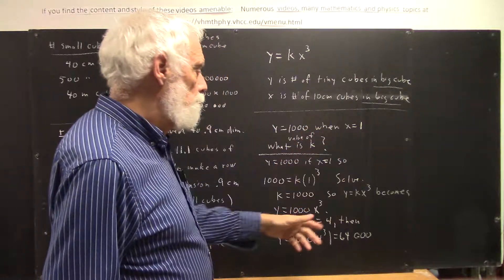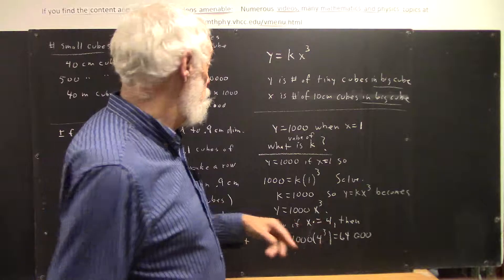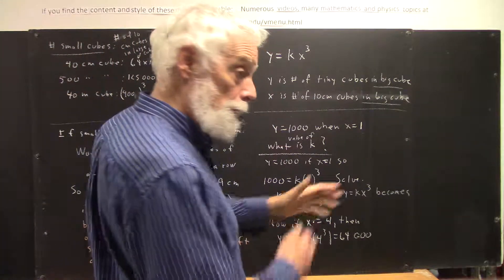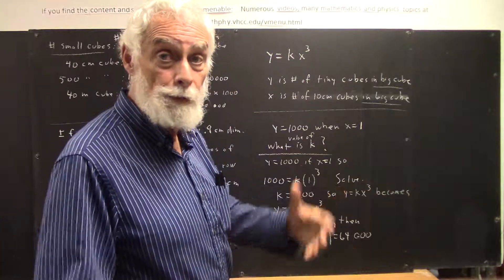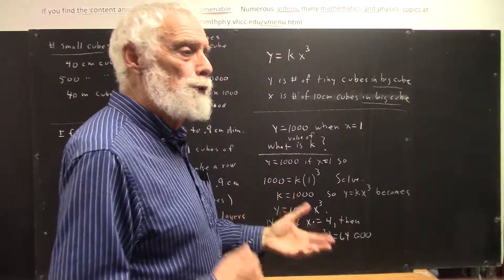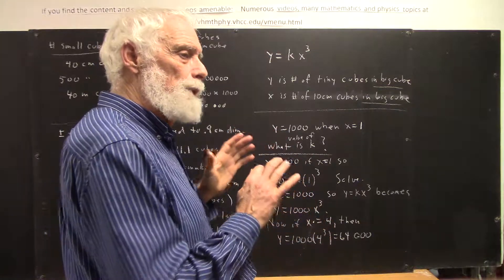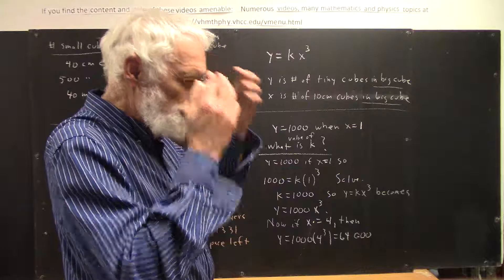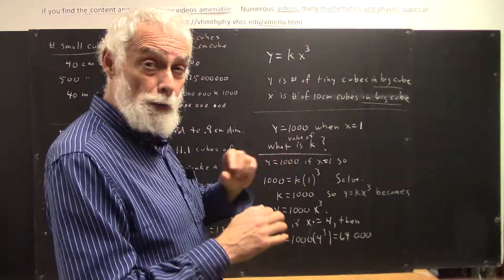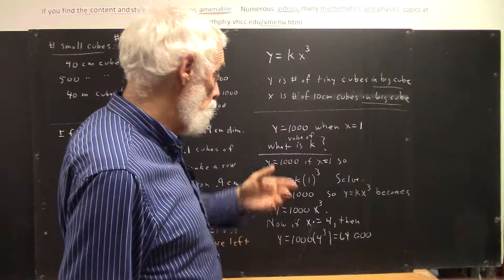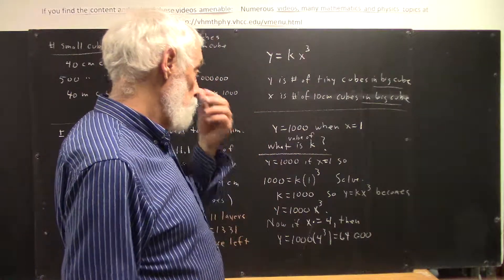We can use this equation to figure out how many tiny cubes would go in any of these big cubes without having to go through all the reasoning. Not that it's not important to be able to go through all the reasoning, but once we get the idea, we maybe don't want to go through every detail of the reasoning every time, even though we probably want to kind of use our imagination to think through rows and layers and so forth. We don't want to really do that.